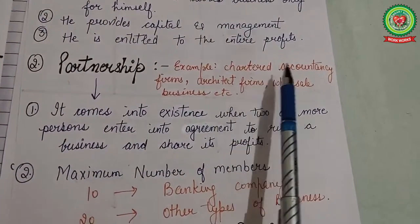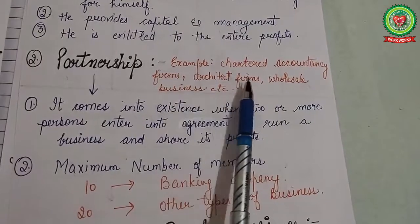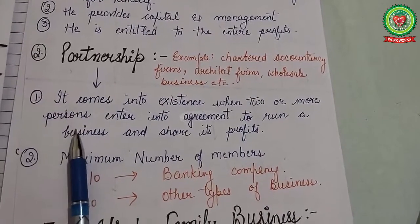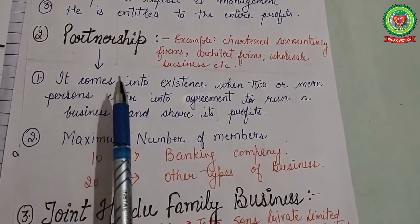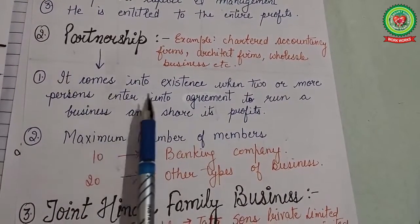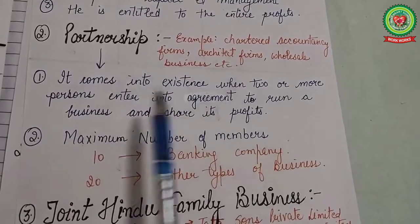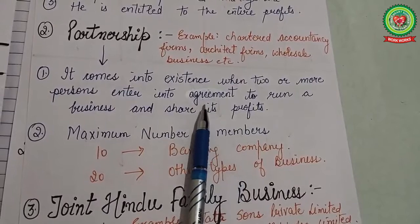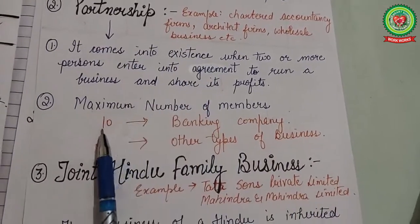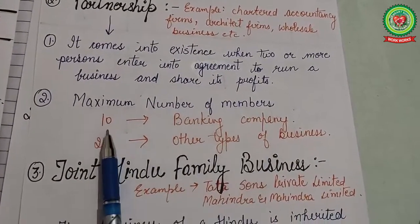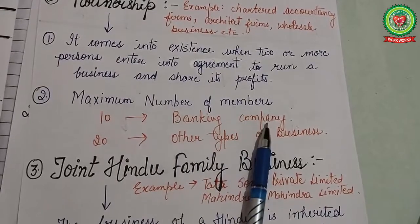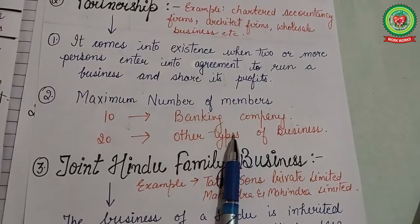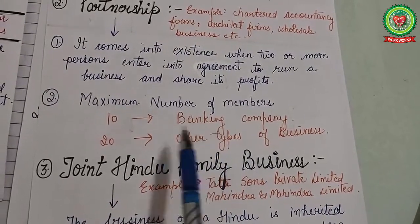Next is partnership. Examples include chartered accountancy firms, architect firms, and wholesale businesses. Partnership is where two or more persons enter into an agreement to run a business and share its profits. These are called partnership firms. The maximum number of members is 10 in the case of a banking company and 20 in the case of other types of business.